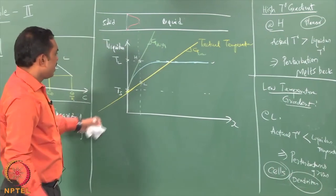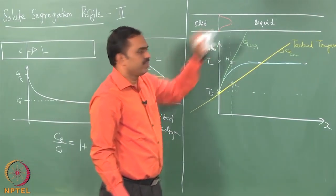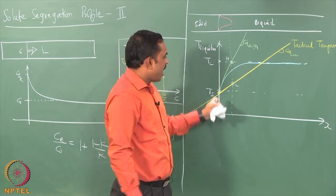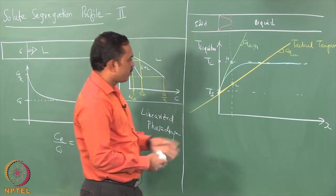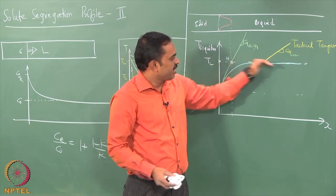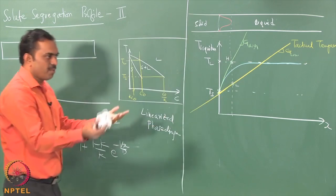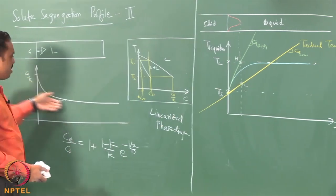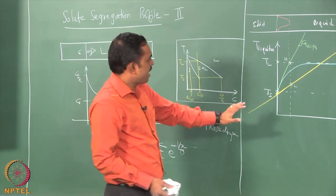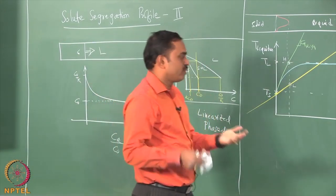So this is how the imposed temperature gradient changes the microstructure evolution in the weldment as it solidifies. We are able to make this conclusion only because we know the variation of the liquidus, and we get the variation of the liquidus in the liquid region from the composition profile obtained by solving the governing equation.